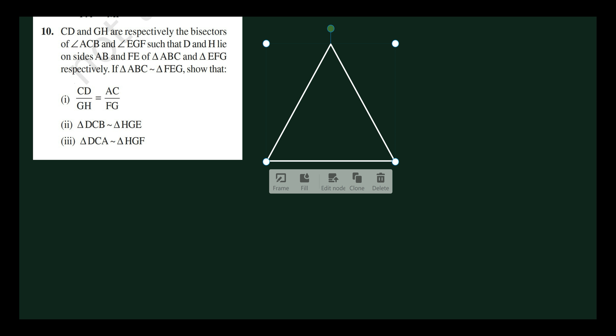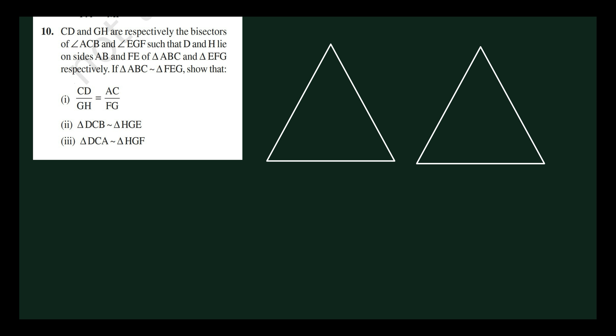CD and GH are respectively the bisectors of angle ACB and angle EGF, such that D and H lie on sides AB and FE of triangle ABC and triangle EFG respectively.